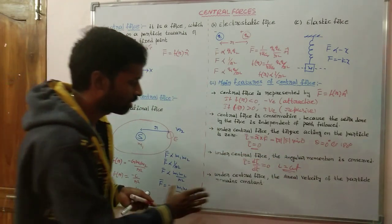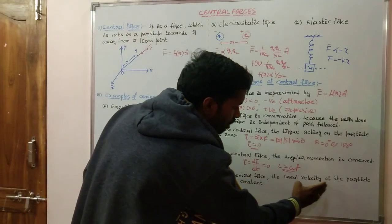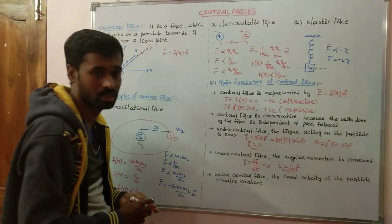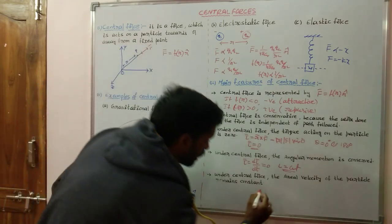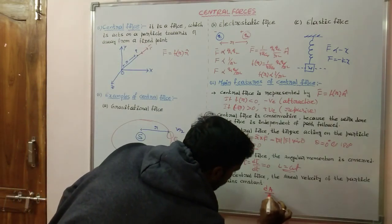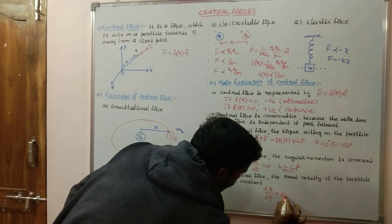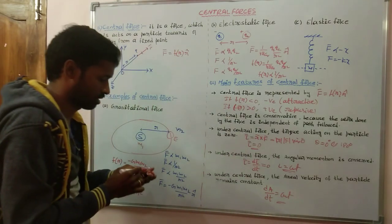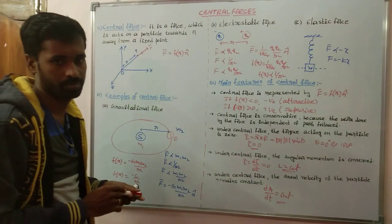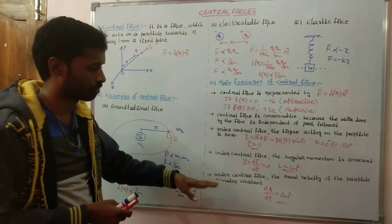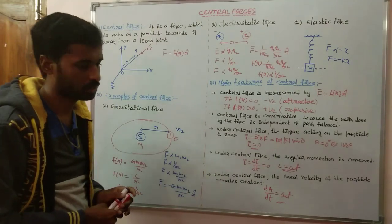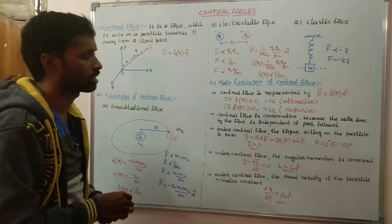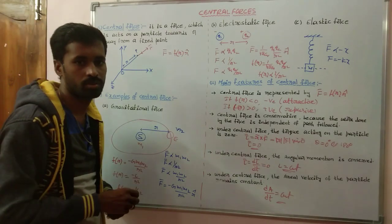The last characteristic: under central force, the aerial velocity of the particle remains constant. Aerial velocity is represented by dA/dt, which is also constant. I will explain this in Kepler's second law in a later chapter. This concludes the introduction about central forces.